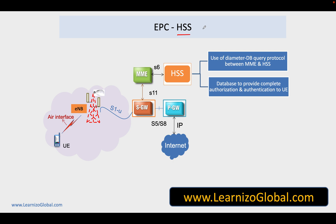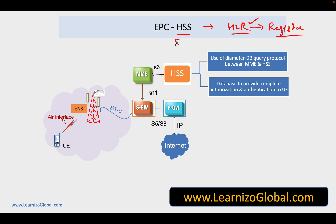HSS is something similar to the functionality of HLR, which is referred to as Home Location Register — typically a subscriber database in the home network. However, at that time the databases were based on some kind of register and they used to be very big in size. As we grew with the networks, we needed to have more and more users in the network and we needed some kind of server-based architecture.